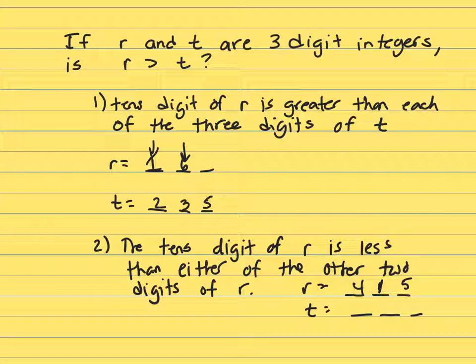So, now let's put both clues together. So, here's R, and here's T. And we know that this digit is greater than each one of these. Right? Yes. We know this is bigger than each one of these.